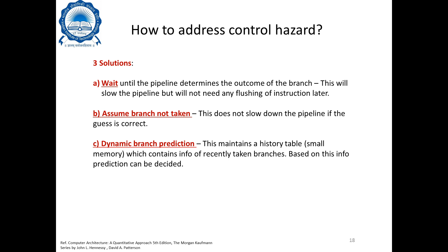Instructions need to be flushed when you make guesses, which is what the second solution does: assume branches are not taken. This proceeds with the instruction flow assuming the branch will not occur and will not slow down the pipeline, but if the assumption is wrong, instructions must be flushed. The third solution is dynamic branch prediction — a history table, which is a small memory, maintains information about recently taken branches, and based on past behavior it makes a dynamic prediction of whether the current branch should be taken or not.